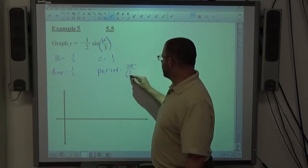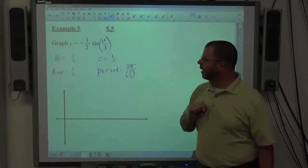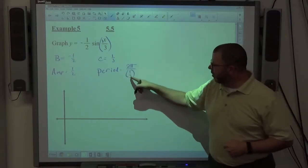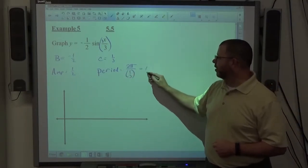2 pi divided by a third. A lot of people want to say two thirds pi because they see a third and they think that. But division by a third is multiplication by three, so that actually equals six pi.